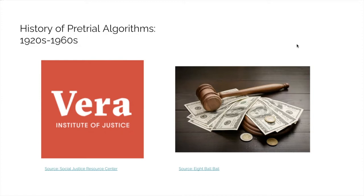The first pretrial assessment tool was developed in 1961 with the Manhattan Bail Project, created by the Vera Institute. This tool considered defendants' ties to the area, employment status, education, and prior criminal record. By using this tool, researchers at the Vera Institute could study the effects of bail on defendant behavior. They found that financial limitations led to defendants having to remain in pretrial custody because they couldn't afford bail, and that people with ties to the community showed up for their day in court even if they were not assigned financial bail. These findings supported the bail reform movement, which argued for releasing people even if they couldn't afford bail.